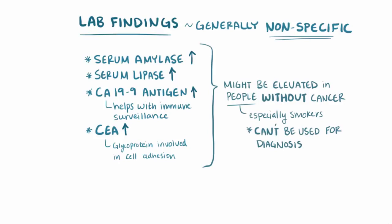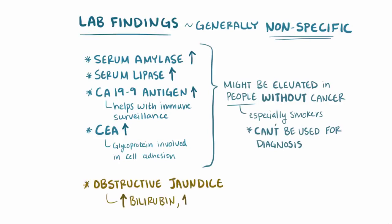Sometimes, when there are related problems like obstructive jaundice, it might cause elevated bilirubin, alkaline phosphatase, and transaminase levels.